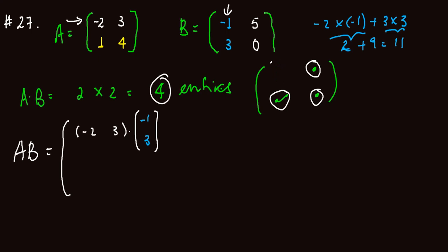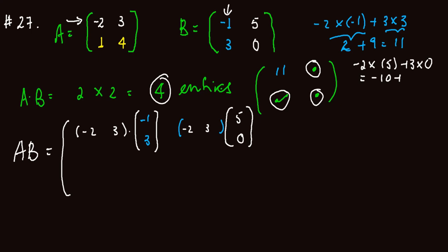Similarly, for the second entry, the dot product between the first row of A and the second column of B will be minus 2 times 5 plus 3 times 0. Minus 2 times 5 is minus 10, plus 3 times 0 is zero. Therefore we get minus 10 for this entry.